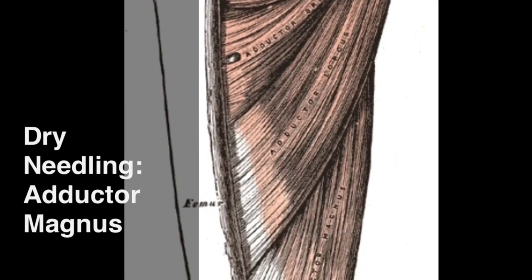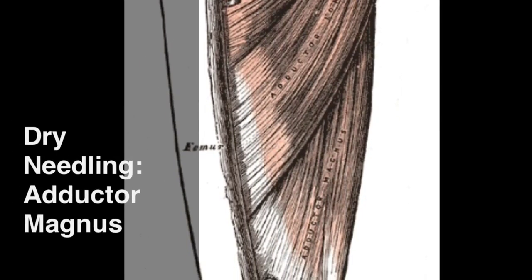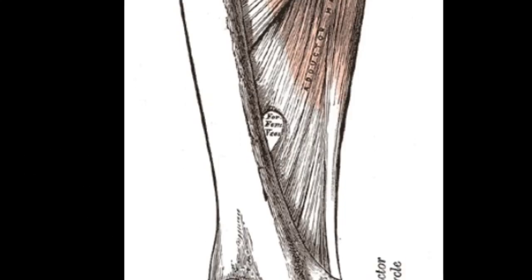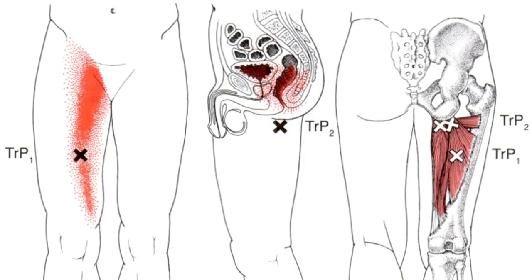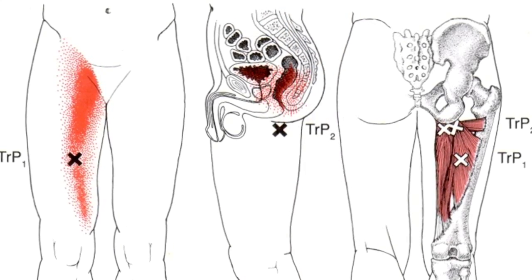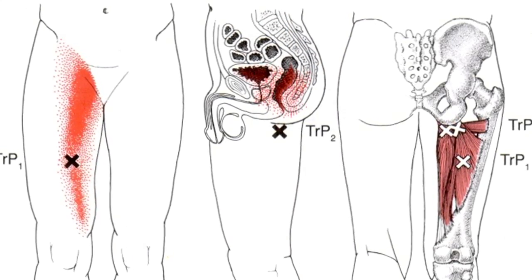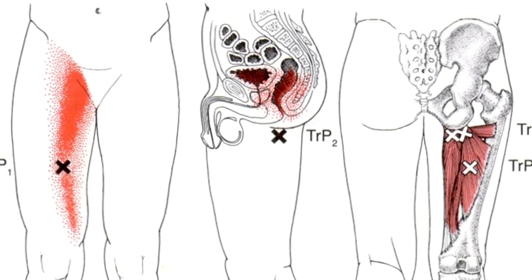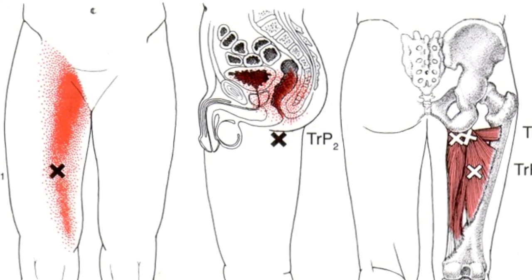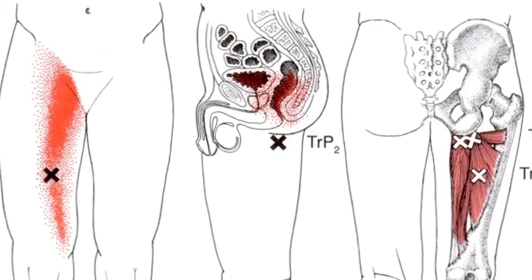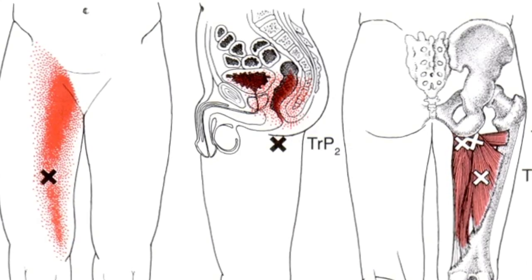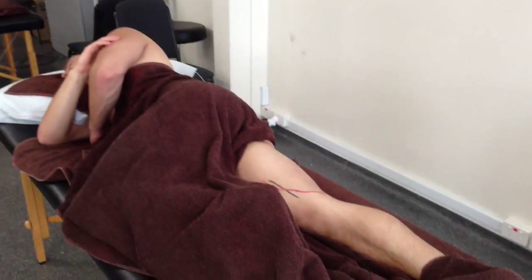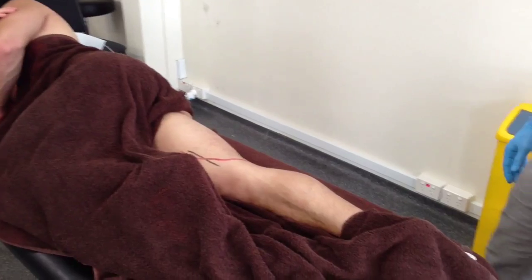This video looks at the dry needling of the adductor magnus muscle. Innervated by the posterior branch of the obturator nerve and the tibial division of the sciatic nerve, L2-4, the lower trigger point taut bands can refer pain along the anterior medial aspect of the thigh. The proximal trigger points may refer pain superiorly to the rectal, vaginal, and urethral regions.